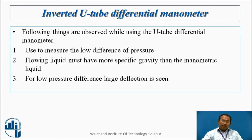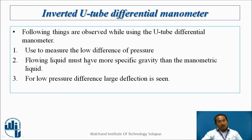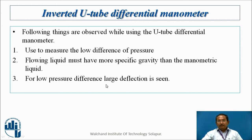Some important points regarding the inverted U-tube differential manometer: it is used to measure low pressure differences and is very accurate. The flowing liquid must have a higher specific gravity than the manometric liquid — which is totally opposite to the U-tube differential manometer. For low pressure differences, it gives a large deflection, which is most important for calculating the difference.